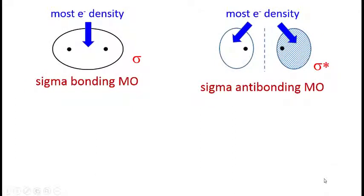When we were drawing the shapes of the molecular orbitals, we kept talking about electron density generally being between the two nuclei, like in a bonding orbital, or outside the two nuclei, like in an antibonding orbital.